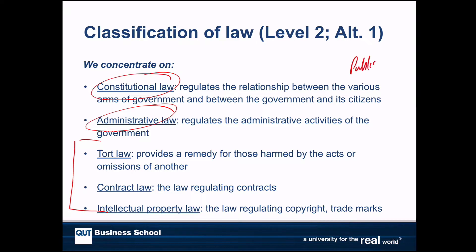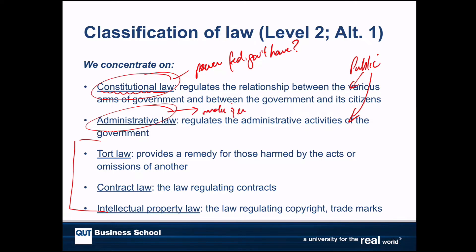Constitutional law and administrative law are public law, because they govern the relationship between the state and the individual. Constitutional law asks what power does the government — particularly the federal government — have? Administrative law asks whether they can actually make and enforce the legislation, and how they go about doing that. They have to do it a certain way.